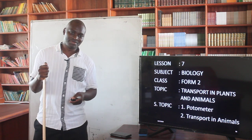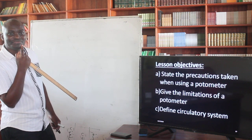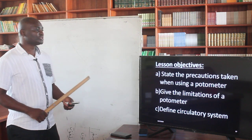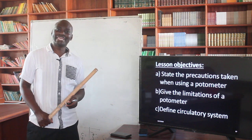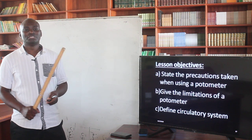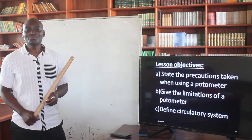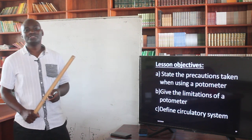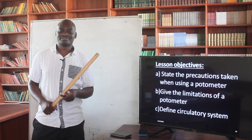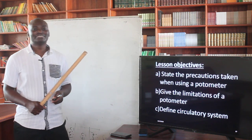The lesson objectives today: at the end of this session you should be able to state the precautions that must be taken when using a potometer, give the limitations of using a potometer as an instrument in measuring the rate of transpiration, and then we will look at translocation and an introduction to the circulatory system.